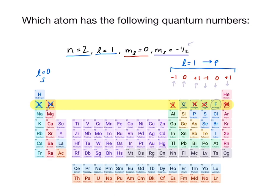We know that m sub s is negative 1 half, which means it's spin down. On the periodic table, we can determine we fill from left to right.